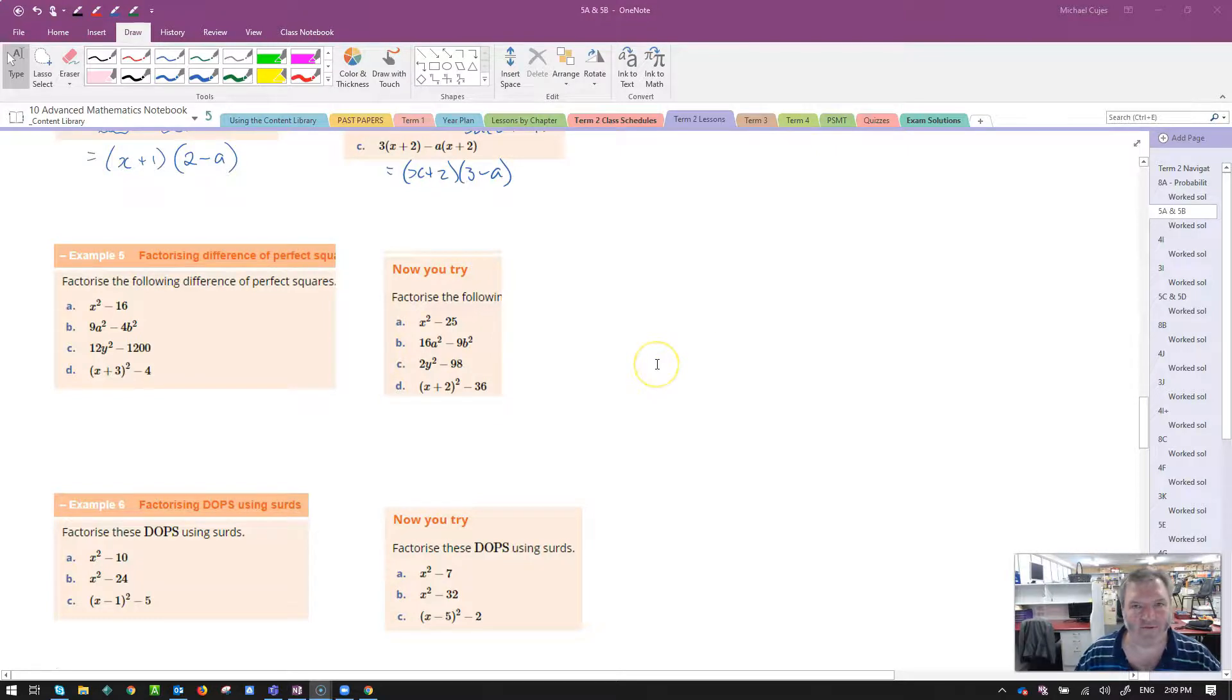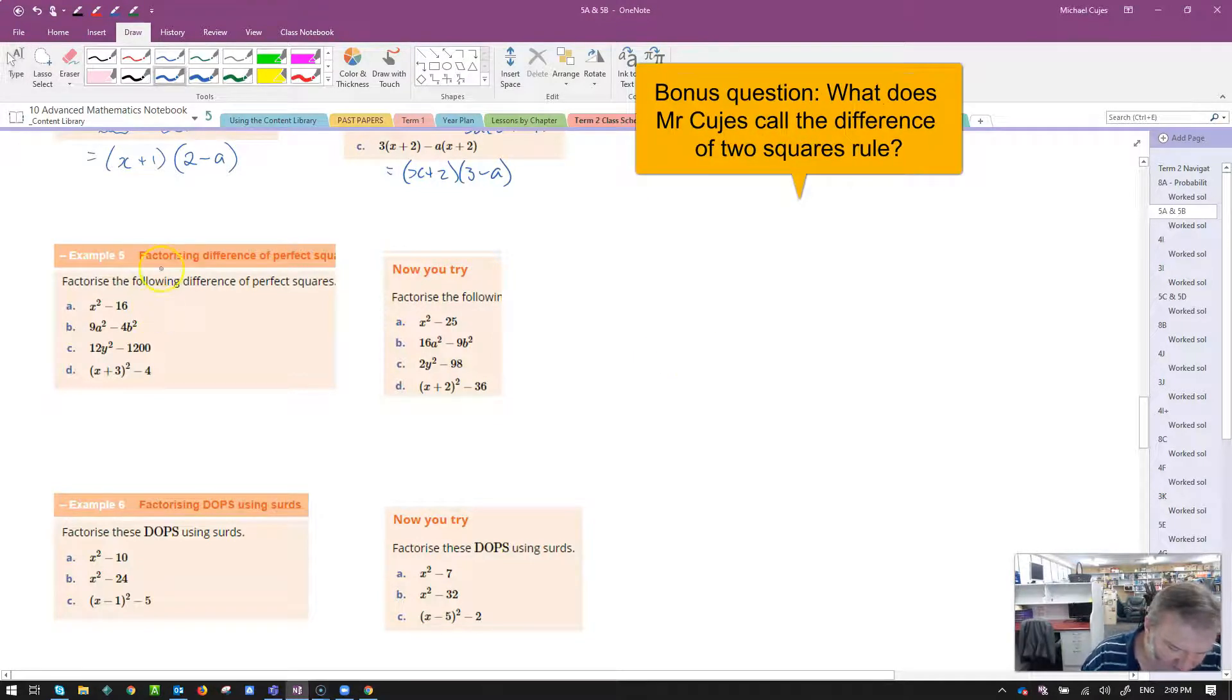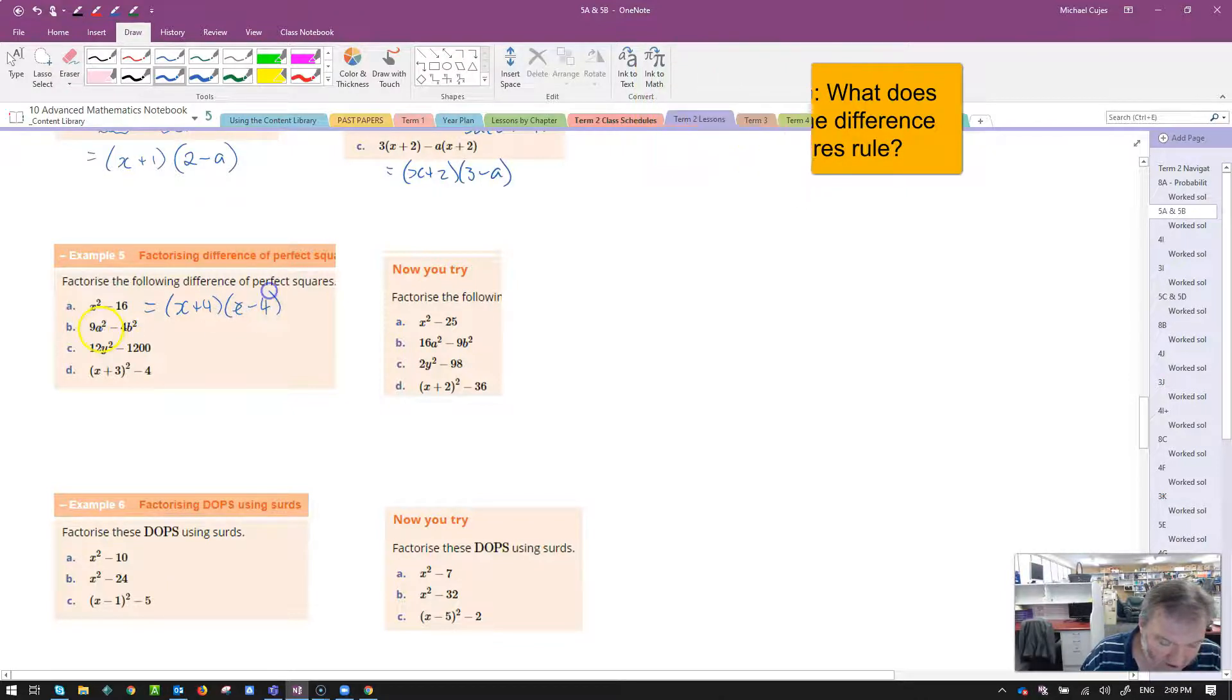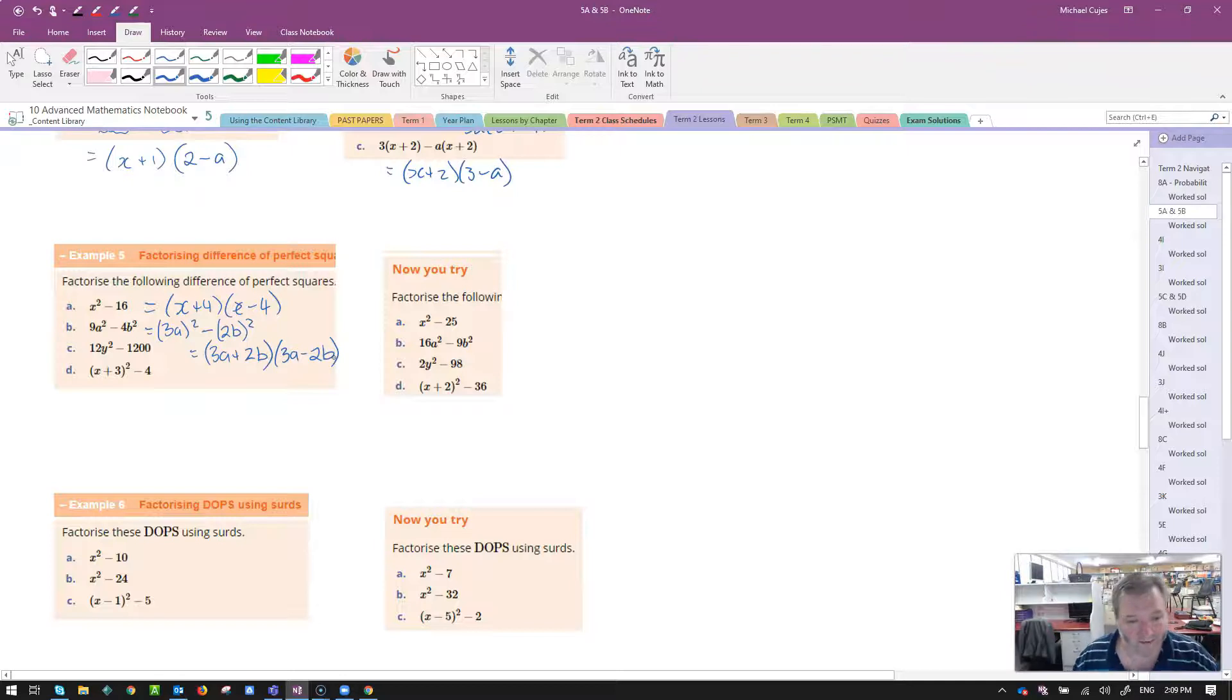Moving on. Oh, our favorite rule in math, difference of two squares. This is going to be so much fun. What do we remember here? 16 is just 4 squared. So this becomes x plus 4 multiplied by x minus 4. 9a squared b minus 4b squared. I'll put an intermediate step. This is going to be 3a all squared minus 2b all squared, which is then going to let us factorize that to 3a plus 2b times 3a minus 2b.